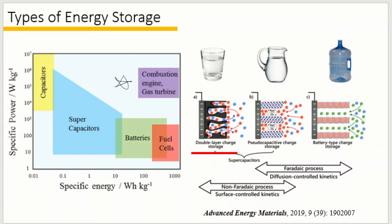An electrical double layer capacitor, which is one type of supercapacitor, realizes charge storage by ion adsorption and the formation of electrical double layers on the electrode surface. The process is completely non-faradaic, meaning there are no redox reactions, so the charge storage process can be pretty fast.